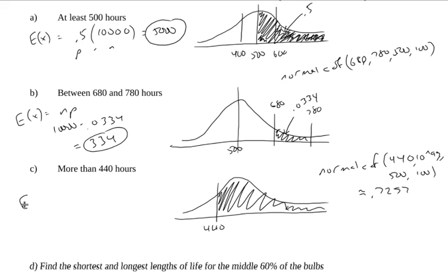And we get this is approximately 0.7257. So the number we would expect to last this much, n times p, is 10,000 times 0.7257. We would expect 7,257 bulbs to last more than 440 hours.